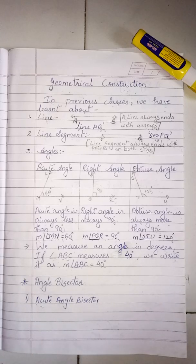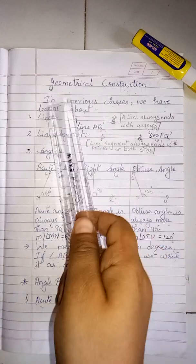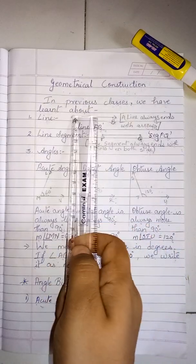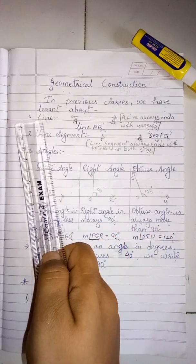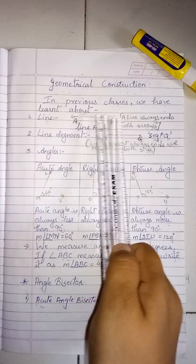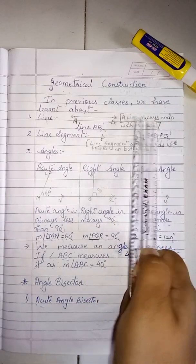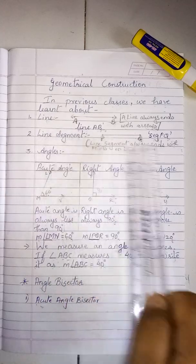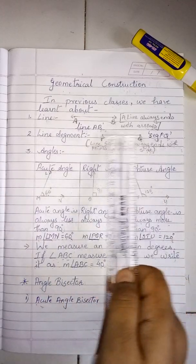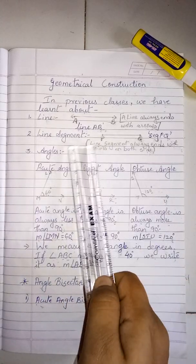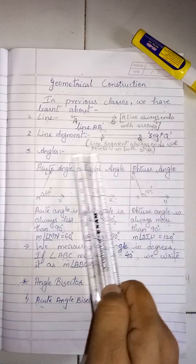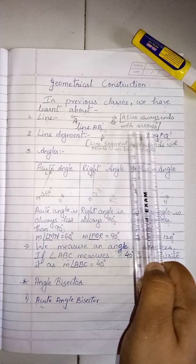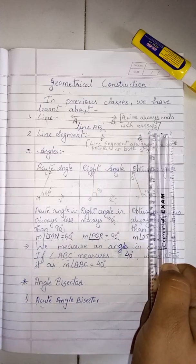Good afternoon everyone. Today we are going to learn geometrical construction. In previous classes we have learned about line — this is line AB, a line always ends with arrows, and when we write we write it as line AB. Line segment — this is segment PQ, a line segment always ends with points on both sides. This is point P, this is point Q, and when we write we write it as seg PQ.